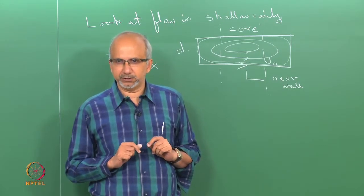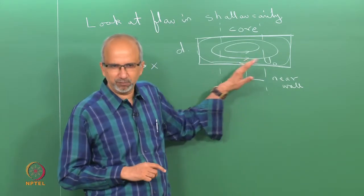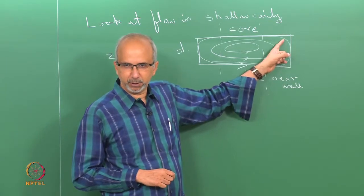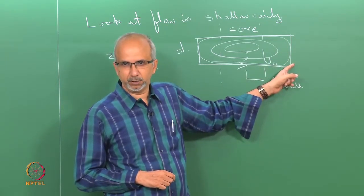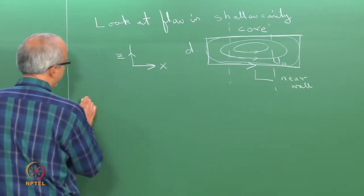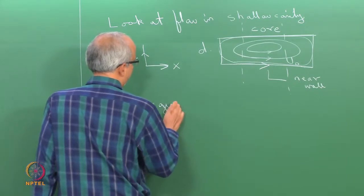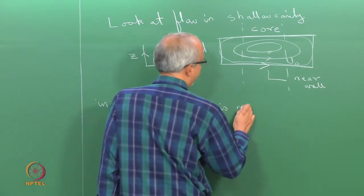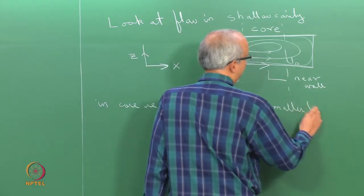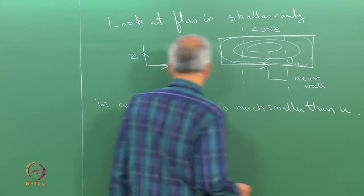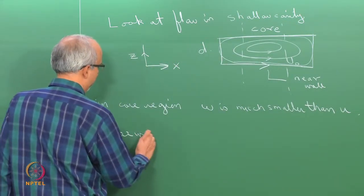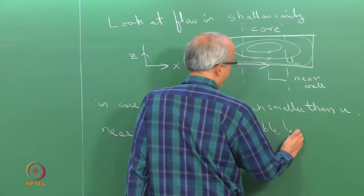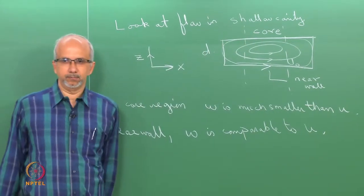In the core region, the vertical component of velocity W is negligible — essentially zero in some limit — whereas near the wall, W is comparable to U. So in the core region, W is much smaller than U, whereas near the wall, W is comparable to U.